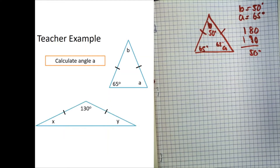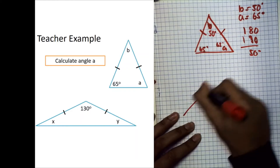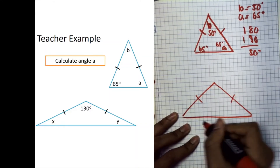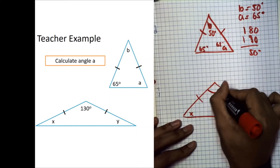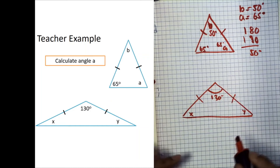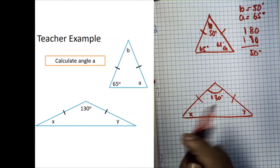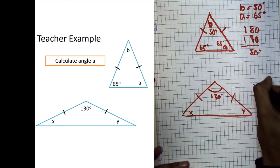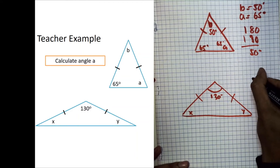Let's look at another triangle. We have two tick marks on two sides, and angles x and y. We're told one angle is 130 degrees. We know the tick marks mean those two sides are equal, therefore x is equal to y.